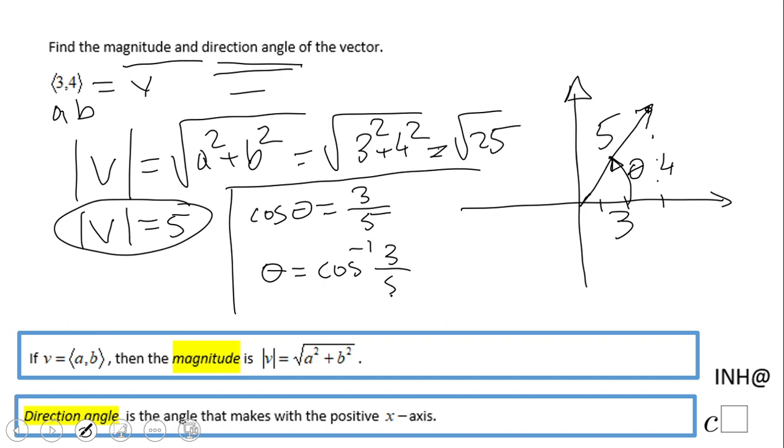So we're going to grab a calculator here, we're going to put that in the calculator, and I'm going to approximate to the nearest tenth: 53.1 degrees. That is how much the direction angle is.